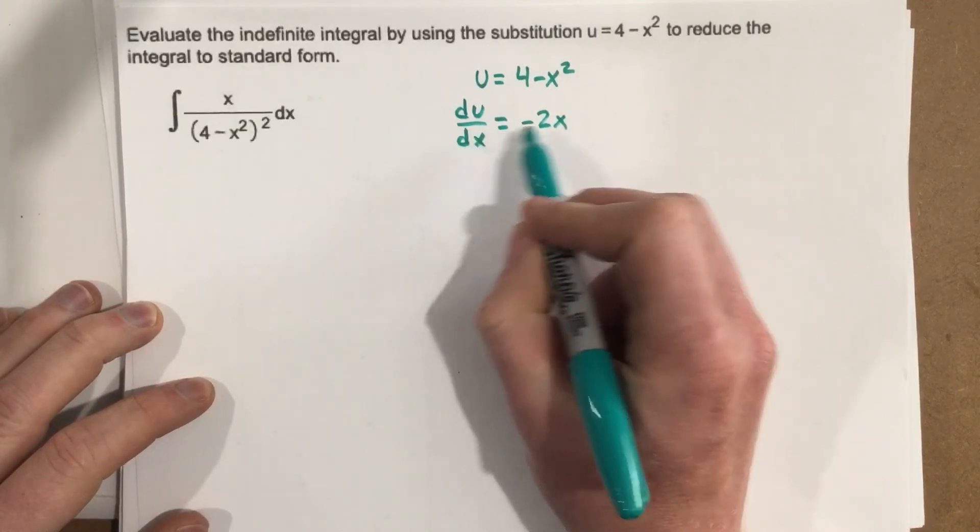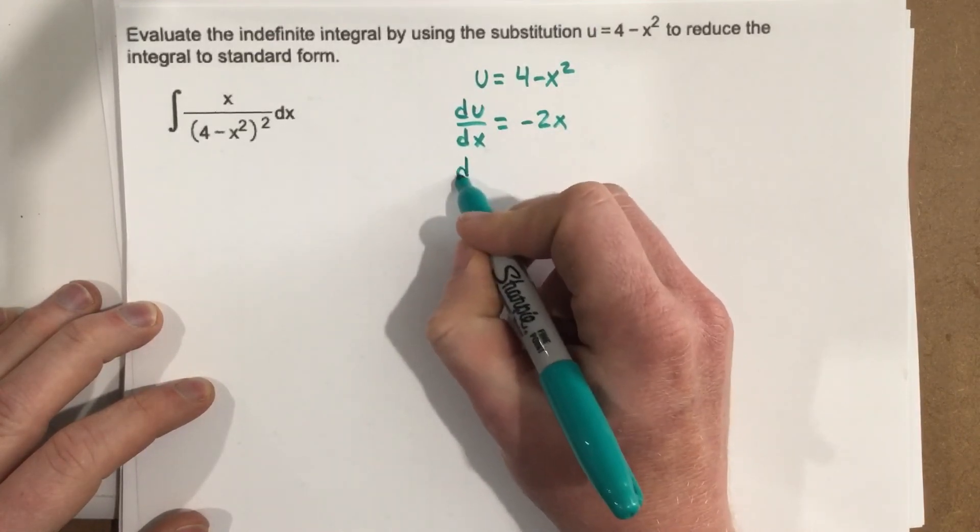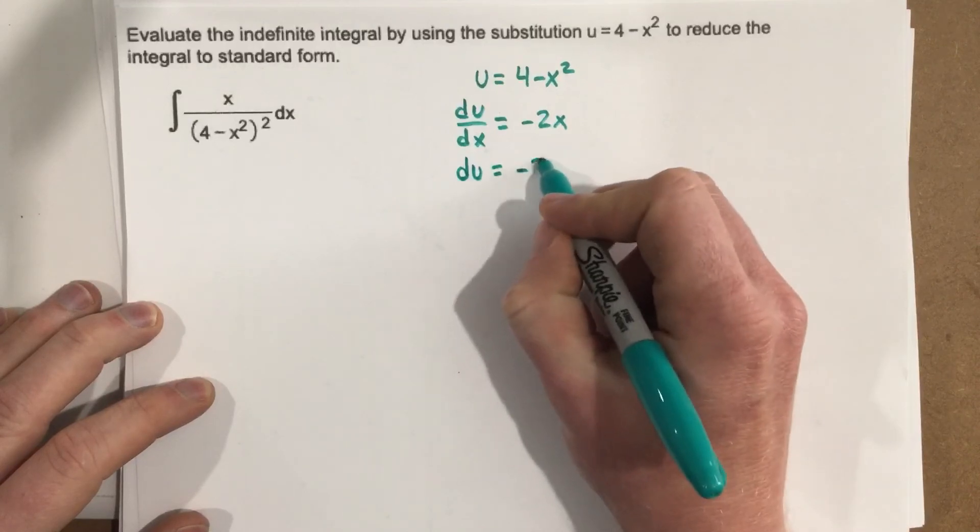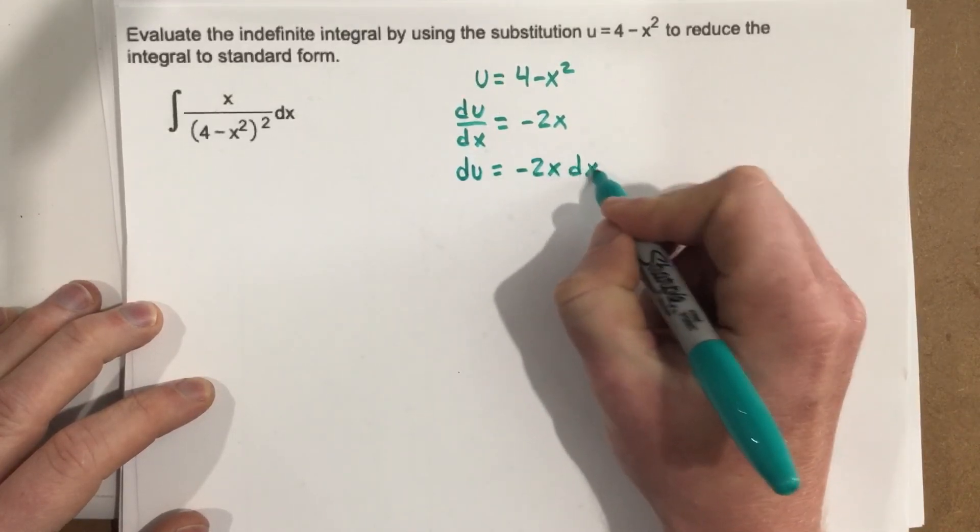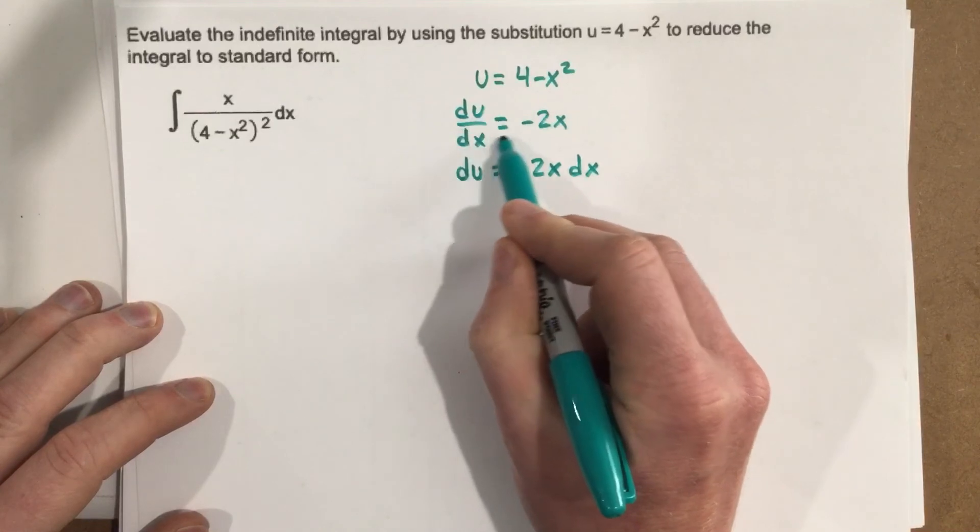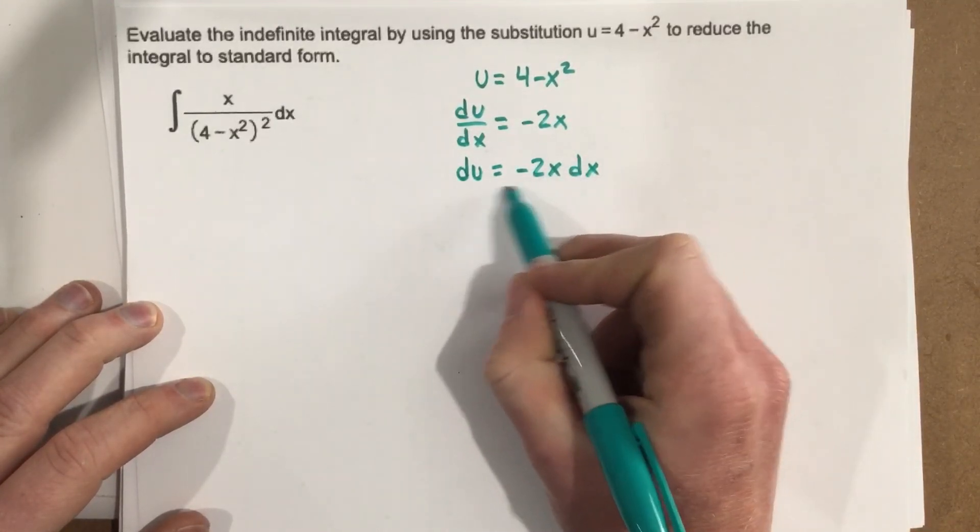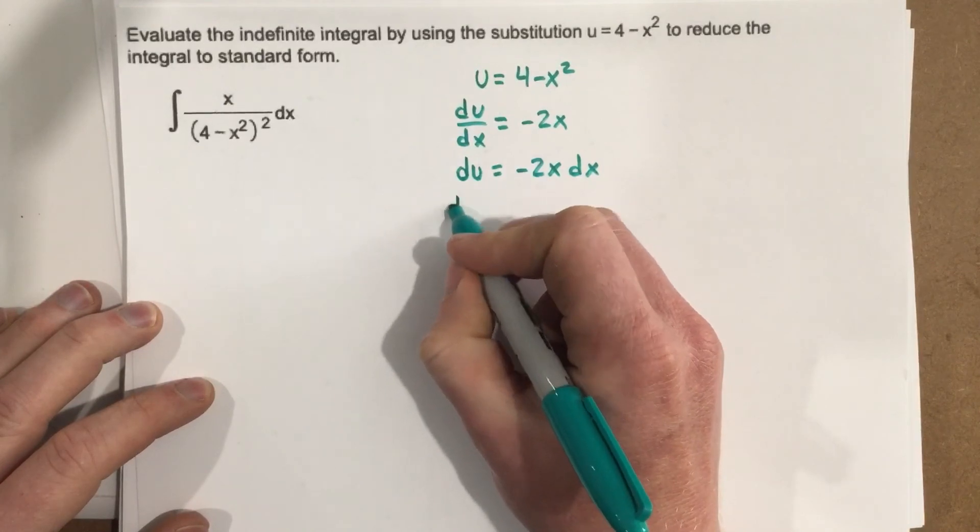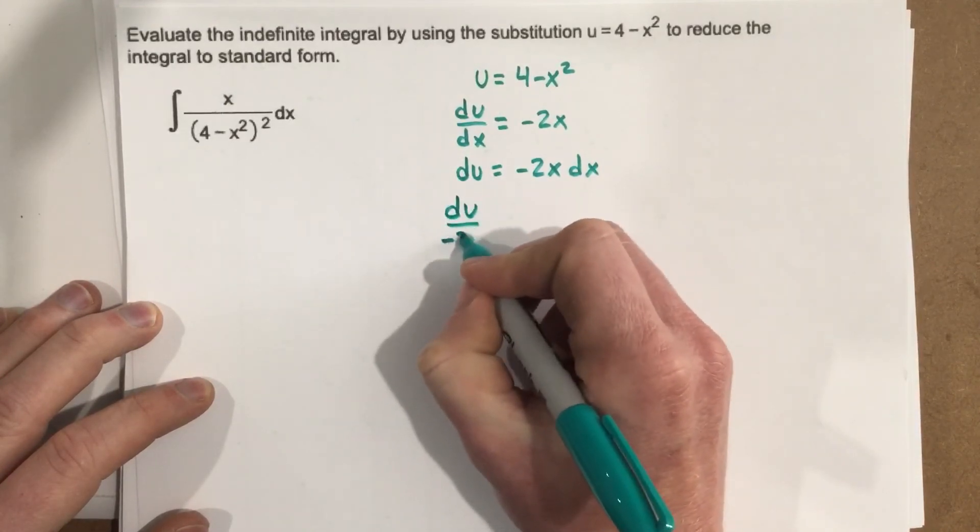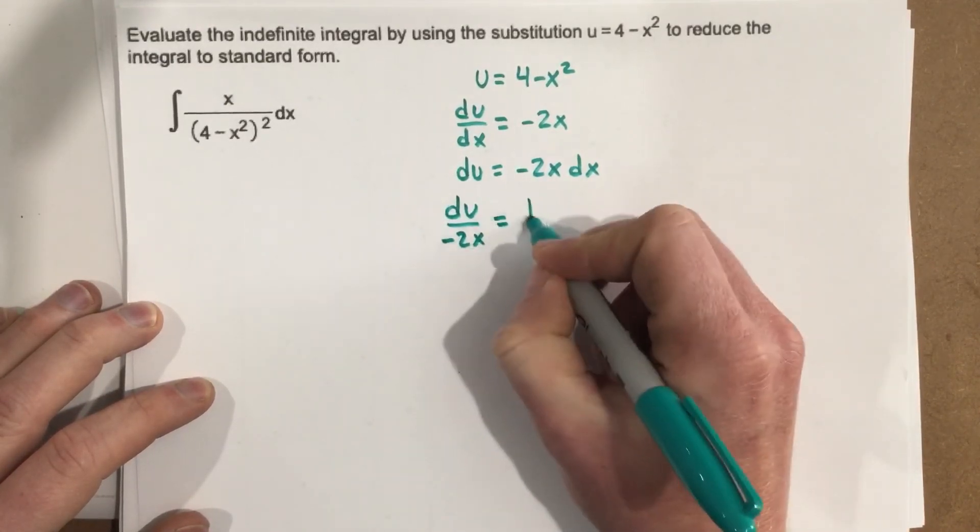So I'm going to multiply by dx to this side that means I have du equals negative 2x dx. Now you'll probably end up skipping this step eventually and just going straight here. And then afterwards I'm going to divide by negative 2x and that would be du over negative 2x equals dx.